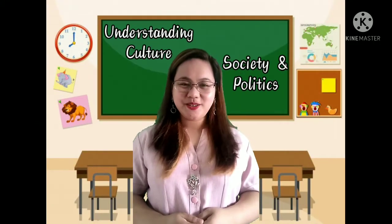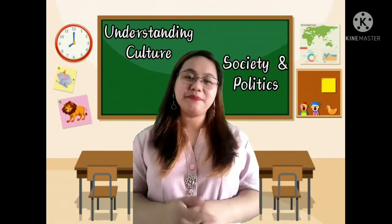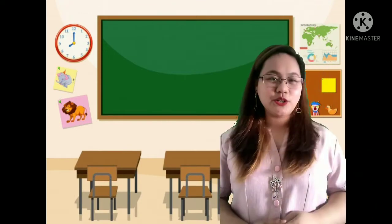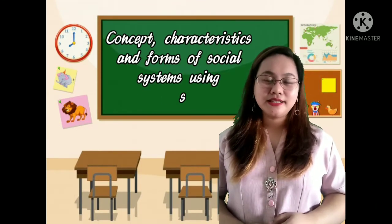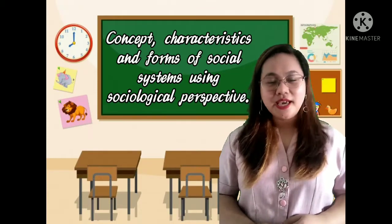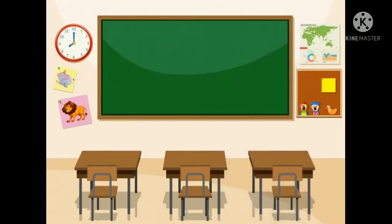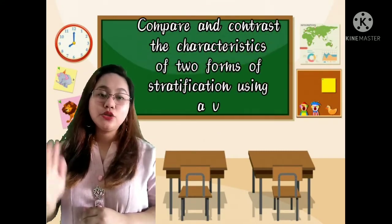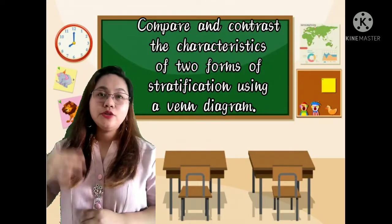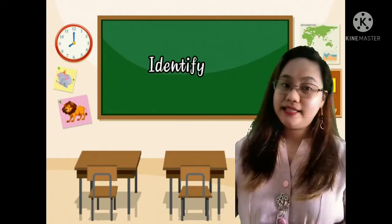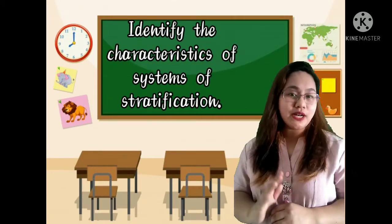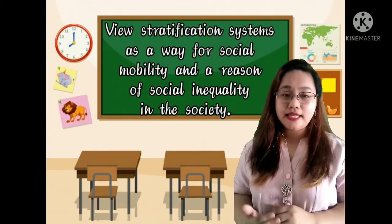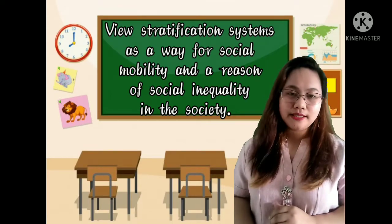Welcome back to Understanding Culture, Society, and Politics. I'm Mrs. Bravo, your teacher for today. For today's lesson, we will be talking about the concepts, characteristics, and forms of social systems using a sociological perspective. The main objective of this lesson is for the learners to compare and contrast the two forms of stratification system using a Venn diagram, identify the characteristics of the system of stratifications, and view stratification system as a way for social mobility and a reason for social inequality in the society.